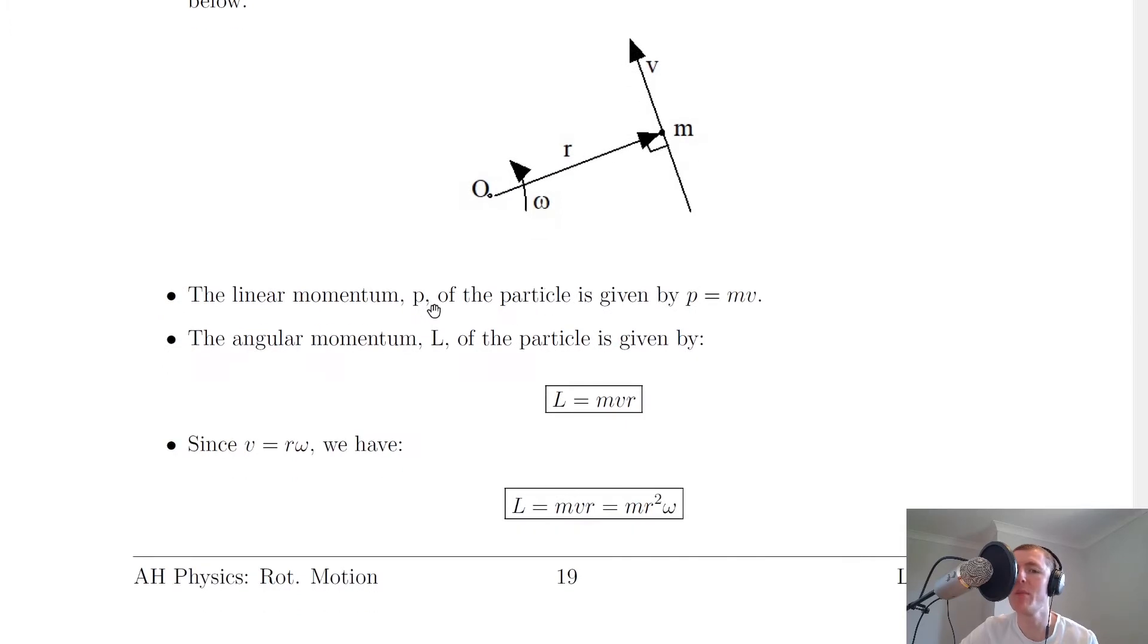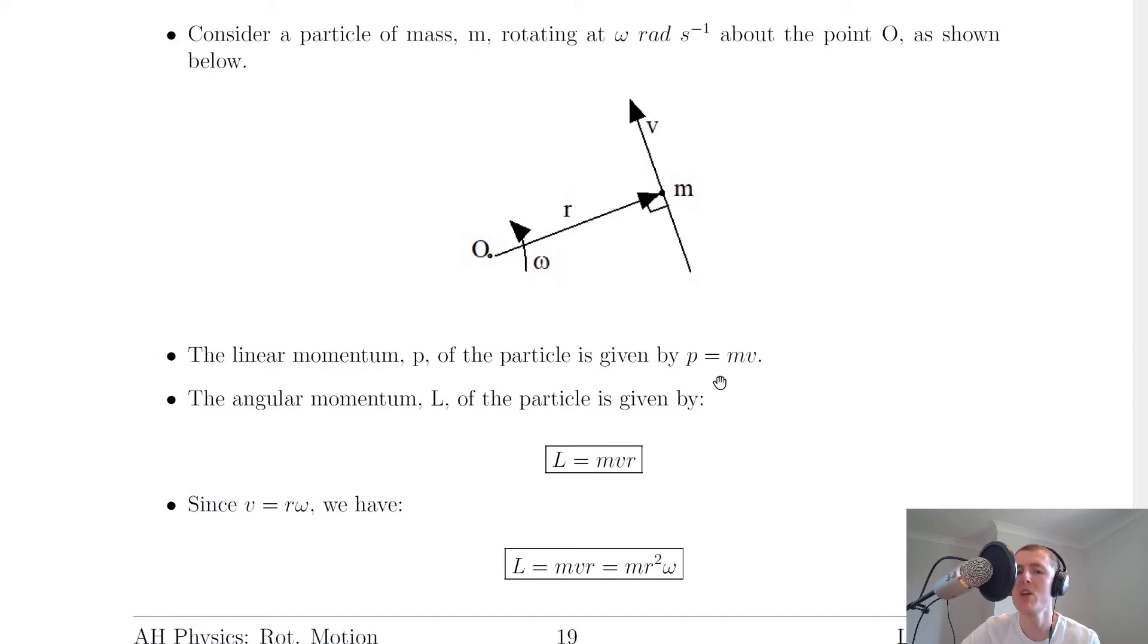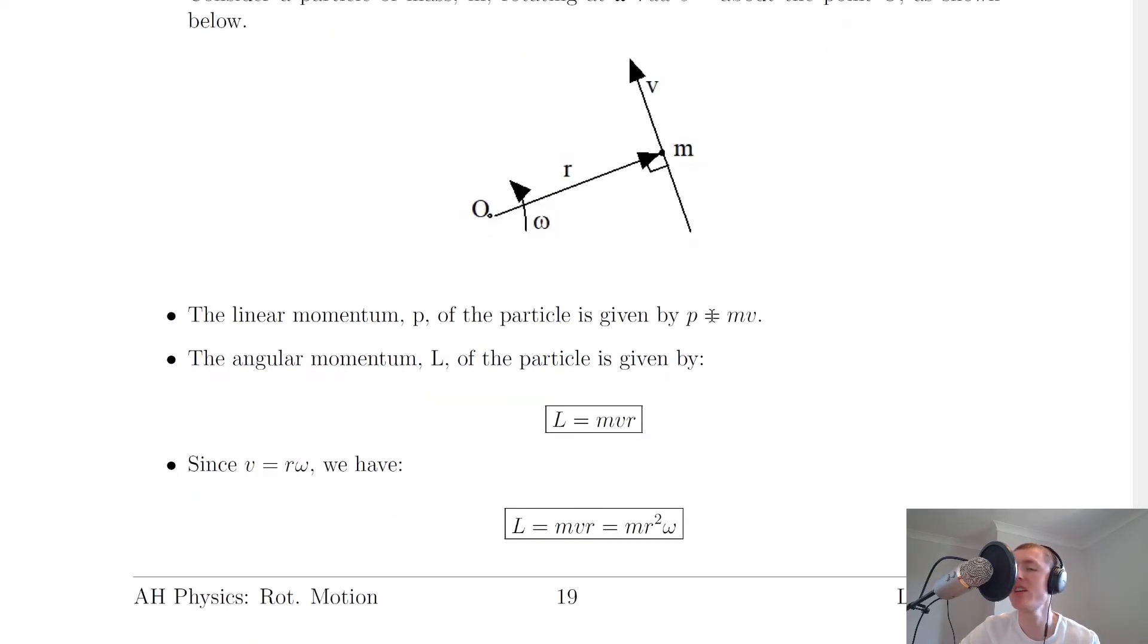Then because of that, we can say that the linear momentum p of the particle is given by p equals mv from this and this quantity here. So p equals mv, and this was the relationship for linear momentum that you would have seen at higher level.